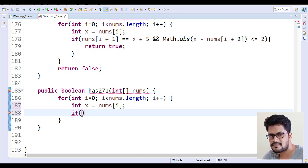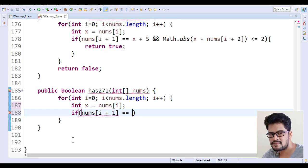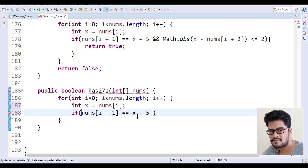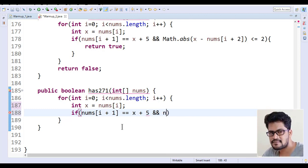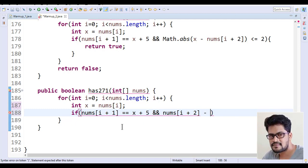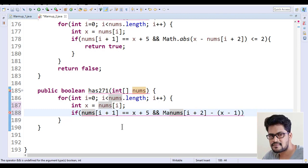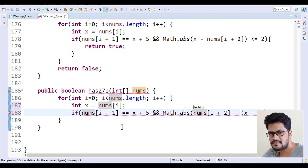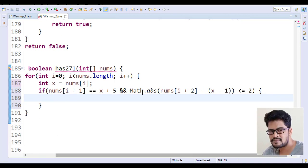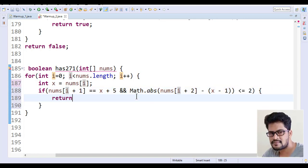Now if the second value, nums of i plus 1, is equal to x plus 5, and the third value, nums of i plus 2, minus x minus 1. You can do either this last value minus this or this. I go for Math dot abs of this value is less than or equal to 2. So Math dot abs, either this minus this or that minus this, will be less than or equal to 2, and then return true.